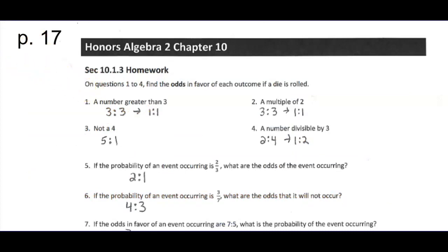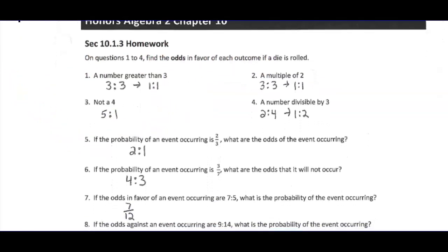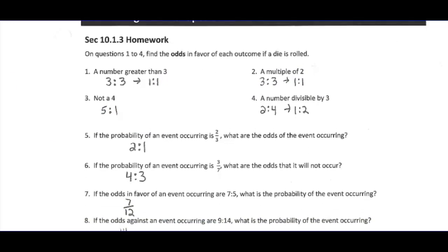Let's go over the homework assignment from both classwork and homework from yesterday and make sure everything is good. The odds in favor of each outcome — you can pause and look things up to make sure you did them the right way. If anything is wrong on this page, please circle it or put a star next to it so we can discuss it the next time we're together.